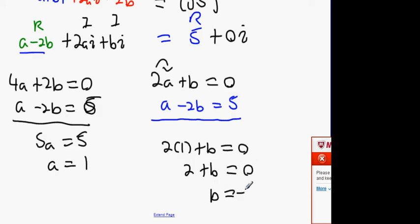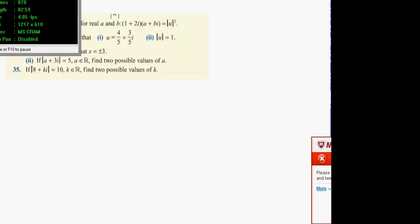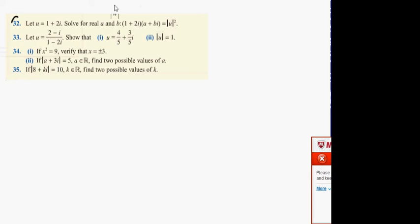Okay. Let's begin here. What it says next is if you take number 34, it says that x squared equals 9. Verify that x equals plus or minus 3. So you said x squared equals 9. You can solve this. You can do it two ways.